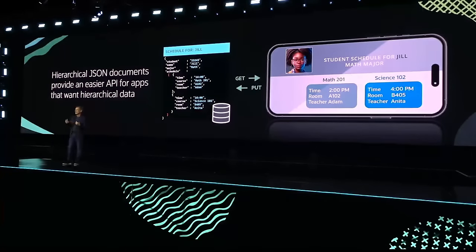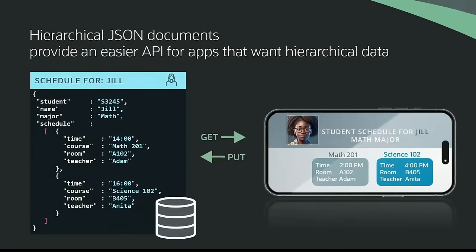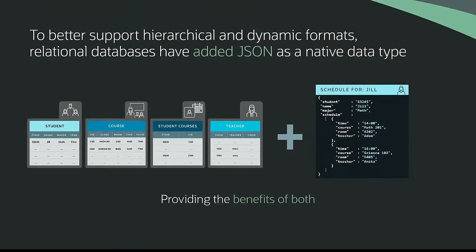This is why developers like hierarchical models like JSON when the data is naturally hierarchical — it provides an easier API for apps that want hierarchical data. You can see on the left what the JSON document looks like: all the data is in one document — the student name, the major, and the schedule with the two classes. From a developer point of view, you simply get the document, display it, and if you want to change anything, you edit the document and put it back into the database.